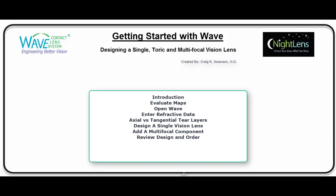Here's what I'll cover in the next 30 minutes. After a brief introduction, I'll share how I evaluate corneal topography maps and how they impact the lens design. I'll review opening the WAVE software and how to properly enter the refracted data, then briefly go over the differences between the axial and tangential tier layer mode. Once these pre-design issues are covered, I'll show you how to actually design a single vision lens and the subtle adjustments that can be made to finalize the design. I'll also discuss how to add a multifocal component, and finally go over the steps to review the completed design before ordering the lens.